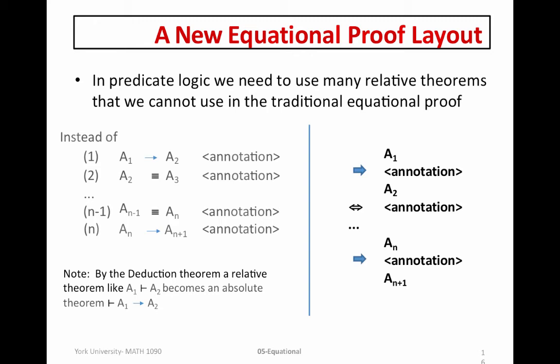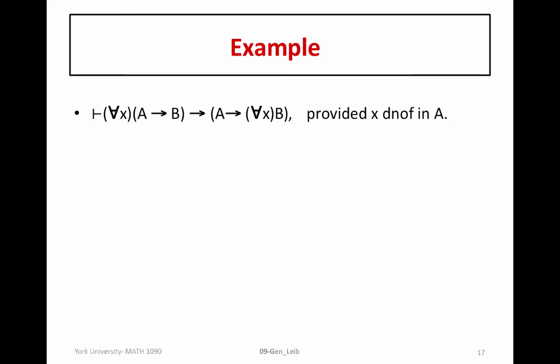So let's now look at a particular quick example of how to apply this new proof layout. Let's prove for all X, A implies B implies A implies for all X B, provided X does not occur free in A. This only holds, so we can only distribute this quantifier through and drop it in front of the A if X does not occur free in A. So that's what we are going to prove. Because we want to prove an implication, we can use an equational style proof with the implication. So we begin with the left-hand side, for all X, A implies B.